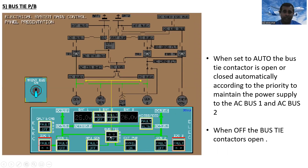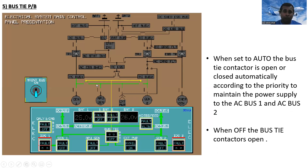The bus tie push button: when set to auto, the tie contactors are opened or closed automatically according to priority, to maintain the power supply to AC bus 1 and AC bus 2. When set to off, the bus tie contactors are open. In the auto position, these contactors open or close automatically to maintain power supply to AC bus 1 or AC bus 2.